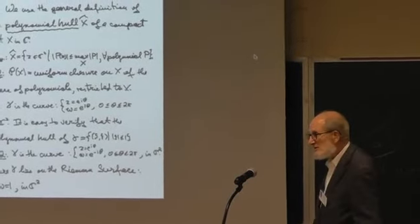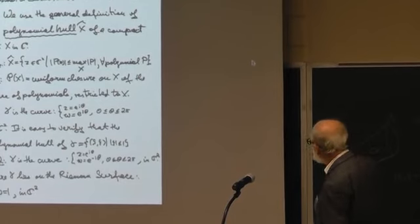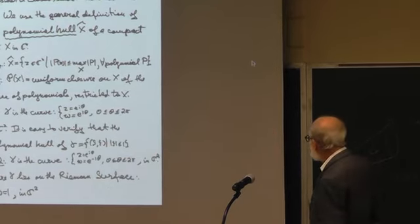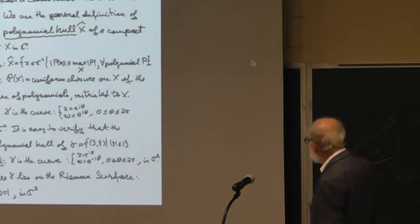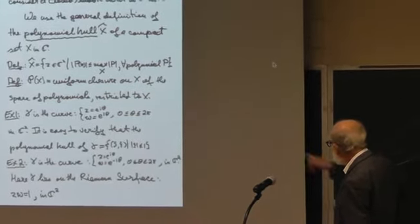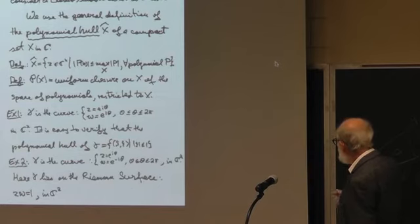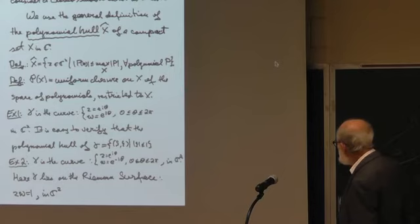Now, we need a general term called polynomial hull of a set. We have a set X in CN. You have a complex set of X in CN, and you look for all points Z in CN where every polynomial is dominated in modulus by the maximum modulus on X. And the closure of the polynomials is a function space on X. There are two very simple examples. Example 1, the curve C is E to the I Theta, and then we need to verify what the polynomial hull is. You get the disc with the circle of radius 1 as a boundary.